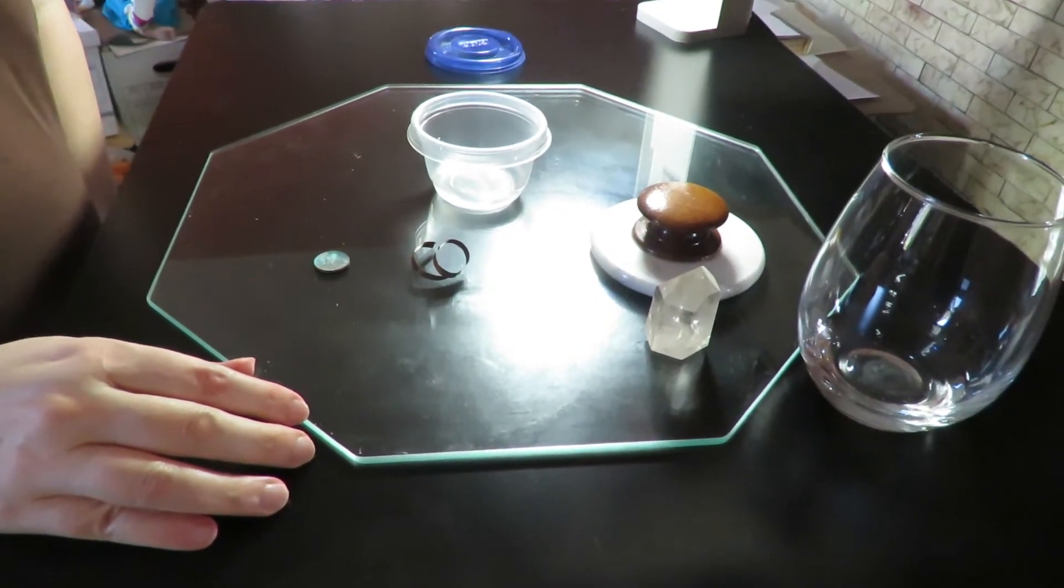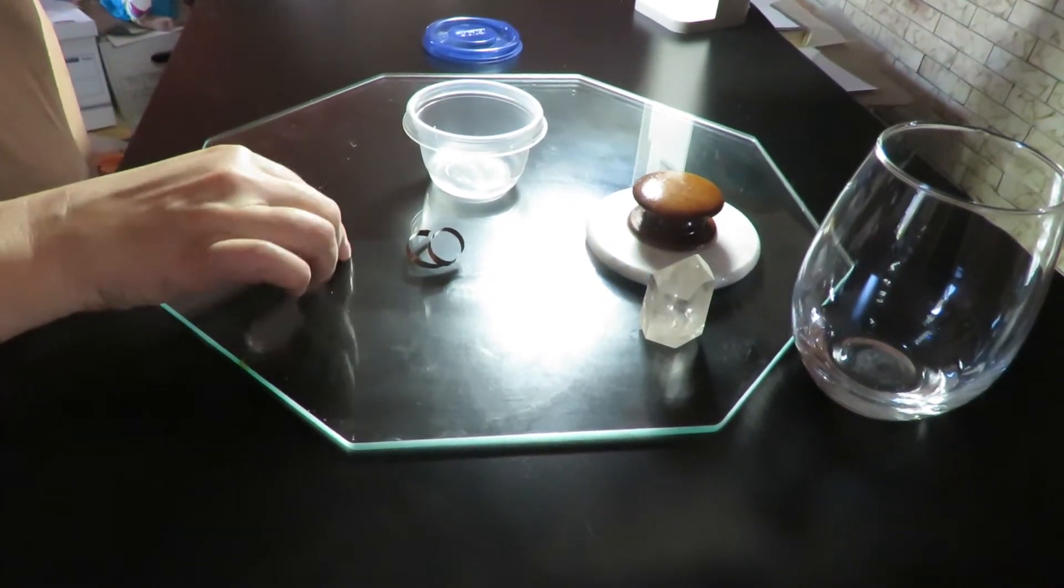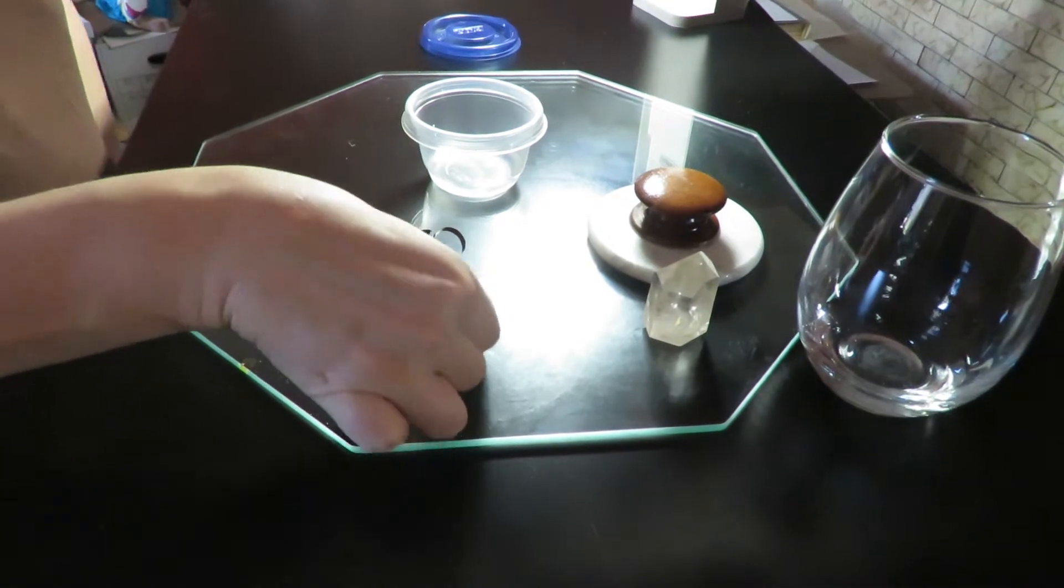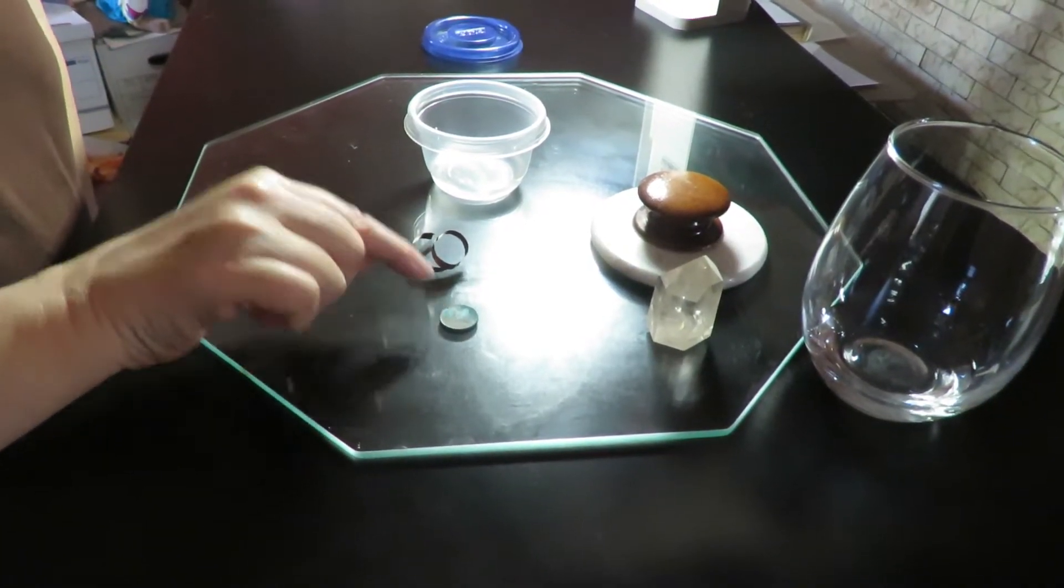Alright, today we're going to make some verdigris, which is a medieval pigment. It is green. It is essentially green rust you find on copper.